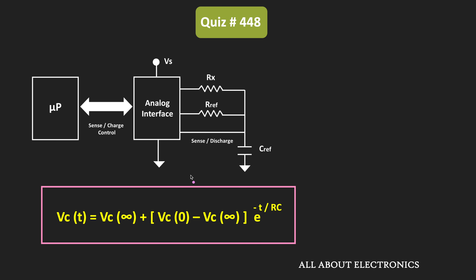Since the circuit involves charging and discharging of an RC circuit, we need the transient equation for the capacitor. For the capacitor, if Vc is the voltage across it, then with time it can be given by the standard transient expression, which was proved in an earlier video on transient analysis. By putting the initial and final values of the capacitor voltage, we can find the specific time required to charge up to a certain voltage level.